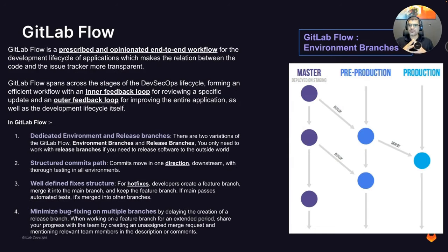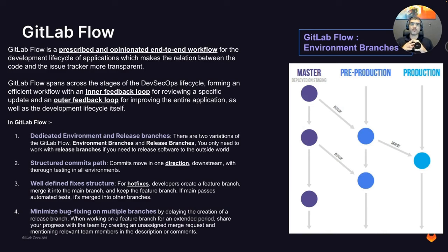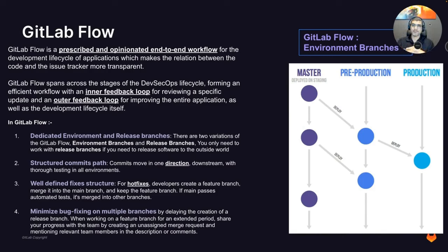The third branching strategy is GitLab Flow, which is a prescriptive, opinionated end-to-end workflow—a very important differentiator. It connects the whole development life cycle all the way from creating a ticket until code is deployed to the production environment. GitLab Flow spans across all the stages of the DevSecOps life cycle, forming an efficient workflow with an inner feedback loop at the branch level and an outer feedback loop across the whole life cycle from ticket creation until deployment.